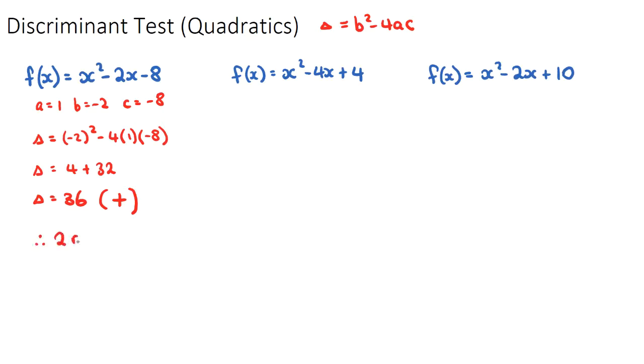So therefore, two real, and sometimes in the IB they actually say distinct, distinct roots. Now a root is a solution for x if we make the y equals zero. Another way of saying that is it's an x-intercept. So if I were to graph what our original equation looks like, it means that we will have two x-intercepts.